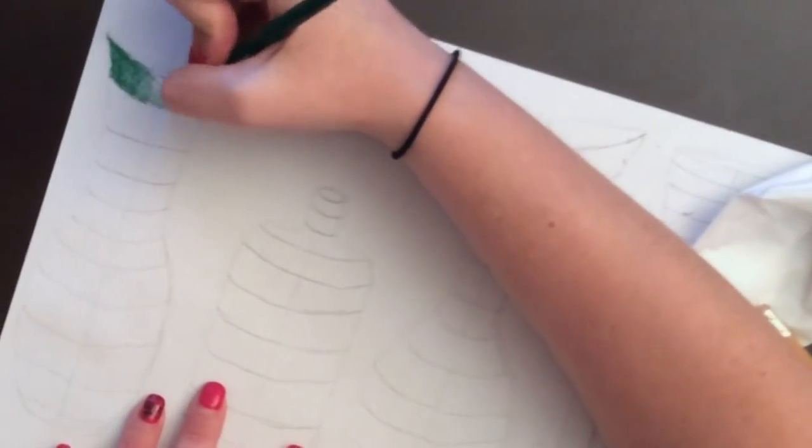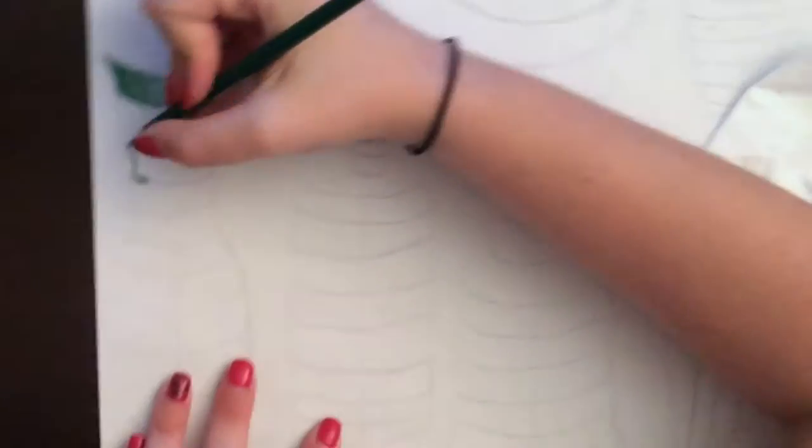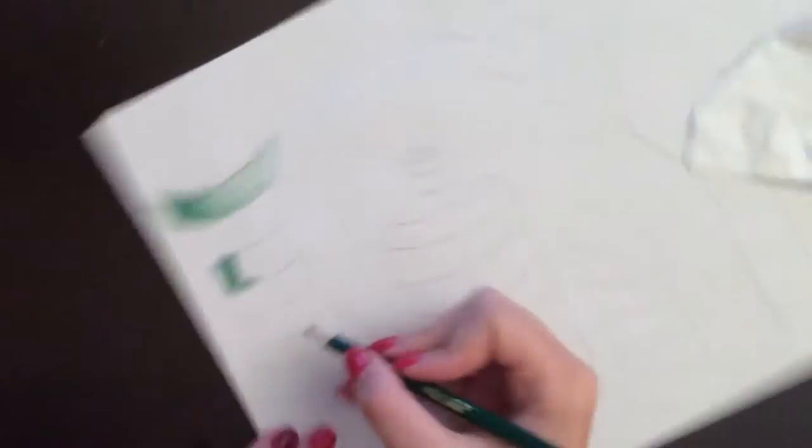You're going to want to shade in the same direction the entire time. So whether it's up and down or side to side, you're going to want to stick with that direction the entire time you're shading.